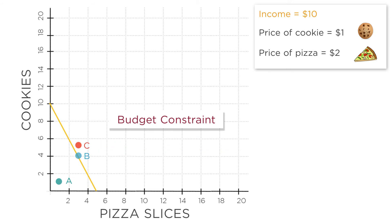Which points are affordable? Point A and point B are both affordable. But point A leaves you with money left over, whereas point B means that you spent your entire income.